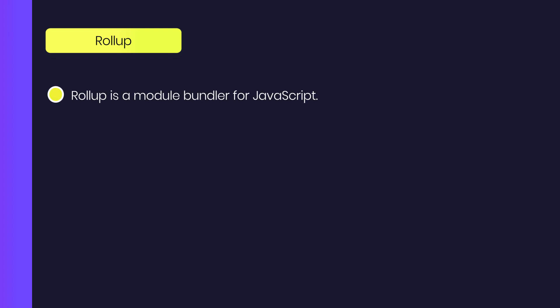Hey everyone and welcome back to Daily Dution. In this video, we're going to take a look at Rollup.js. Rollup is a module bundler for JavaScript which compiles small pieces of code into something larger and more complex, such as a library or application, just like Webpack. It's going to grab all the JS files and put everything inside a single .js file. Many recent frameworks use Rollup to make bundles because it's so fast and lightweight.